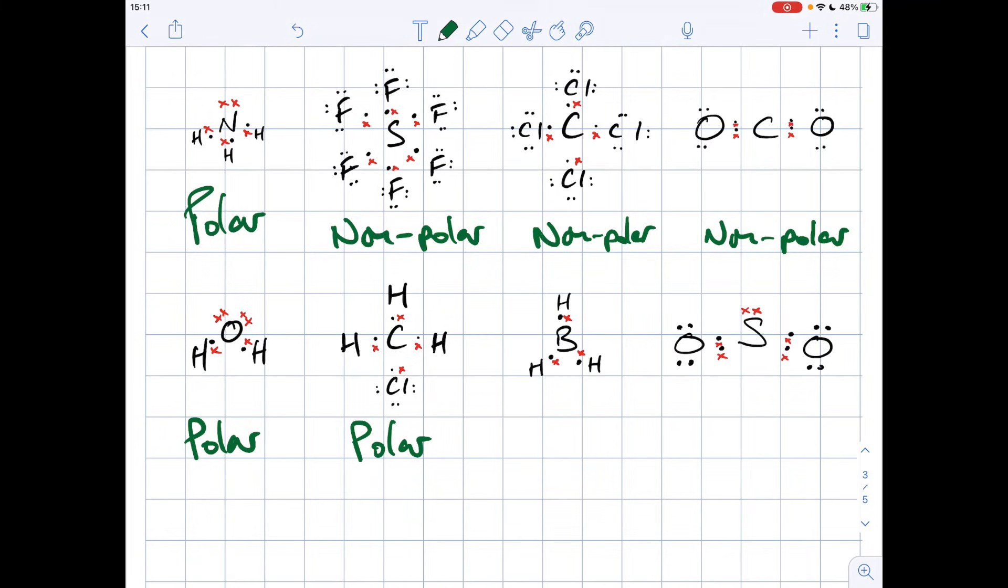BH3, so it's got no lone pairs, they're all hydrogens around the central atom, non-polar. And finally, sulfur dioxide. That's different to carbon dioxide because it's got the lone pair on the sulfur. So because of that lone pair, it's a polar molecule.